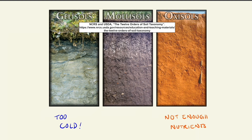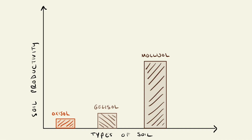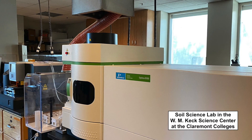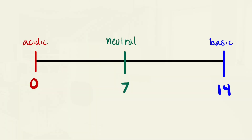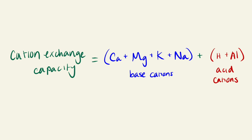Scientists can quantify the differences in soil productivity with several methods. Chemical analyses conducted in laboratories include the measurement of pH, or soil acidity, and cation exchange capacity — CEC for short — which is a measure of nutrient availability in the soil. But there are plenty of other analyses that don't need a lab, and you can try these at home on your own.